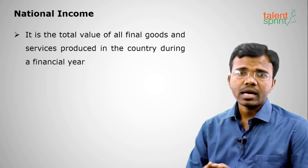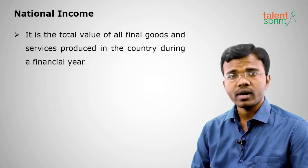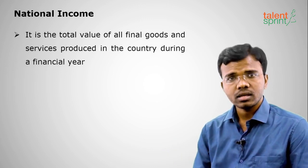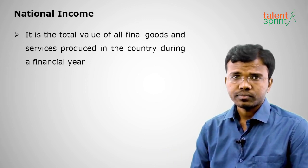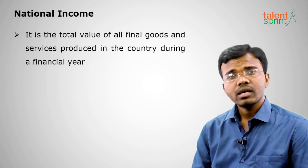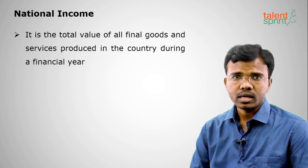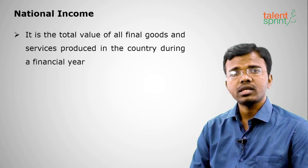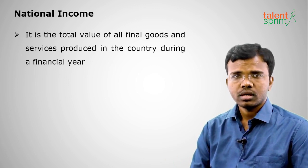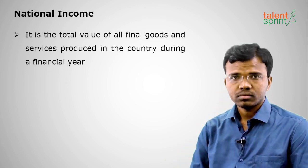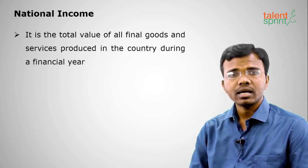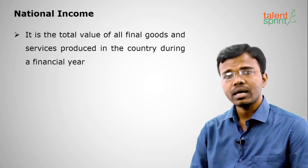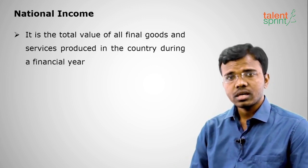There are two types of goods: final goods and intermediate goods. A final good is one which is ready for use by the consumer with no further production on it. An intermediate good is one which undergoes a manufacturing process and is not ready for use. For example, a marker is a final good because it is ready for use.